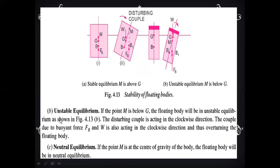The second condition is unstable equilibrium. If the point M is below G, the floating body will be in unstable equilibrium as shown in the figure. The disturbing couple acts in the clockwise direction, and the couple due to buoyancy force FB and W also acts in the clockwise direction, thus overturning the floating body.